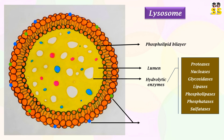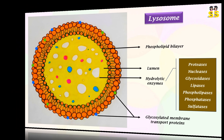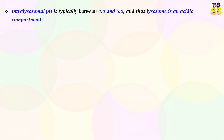The luminal surface of the lysosomal membrane is composed of highly glycosylated proteins. Intralysosomal pH is typically between 4 and 5, and thus the lysosome is an acidic compartment.